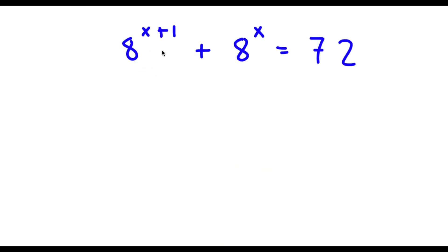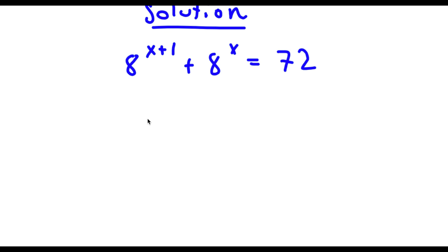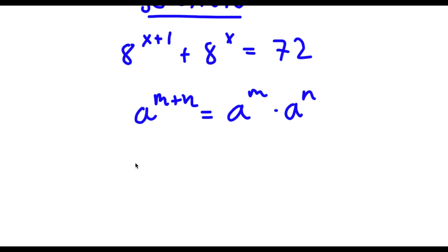Alright, so I have 8 to the power of x plus 1 plus 8 to the power of x is equal to 72. I want to find the value of x. Now if I have something in the form a to the power of m plus n, this is equal to a to the power of m times a to the power of n. So 8 to the power of x plus 1 equals 8 to the power of x times 8 to the power of 1. So now I have 8^x times 8^1 plus 8^x is equal to 72.